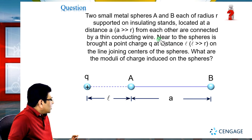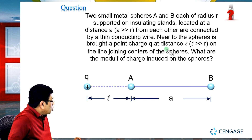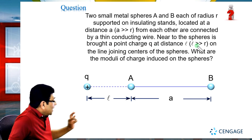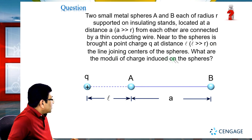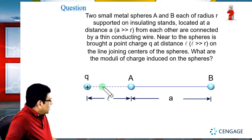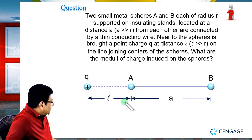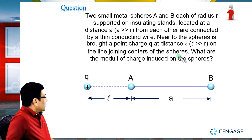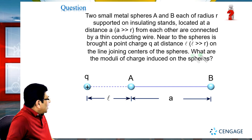Near the spheres is a point charge q at a distance l (where l >> r) on the line joining the centers of the spheres. We need to calculate the modulus of the charge induced on the spheres.